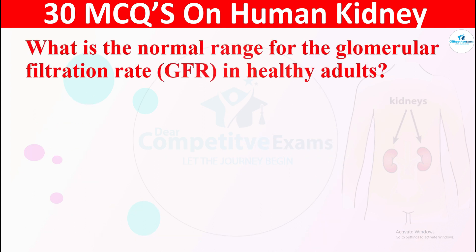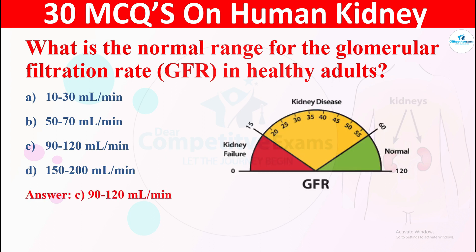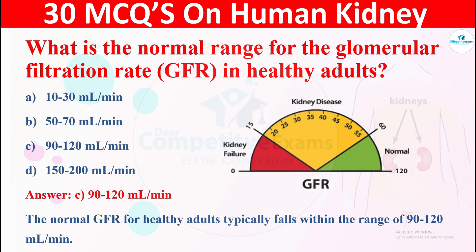Question 24: What is the normal range for the glomerular filtration rate (GFR) in healthy adults? The options are: A) 10 to 30 ml per minute, B) 50 to 70 ml per minute, C) 90 to 120 ml per minute, or D) 150 to 200 ml per minute. The correct answer is 90 to 120 ml per minute. The normal GFR for healthy adults typically falls within the range of 90 to 120 ml per minute.